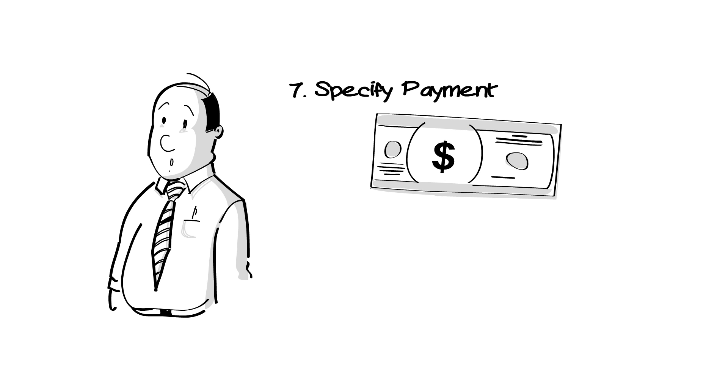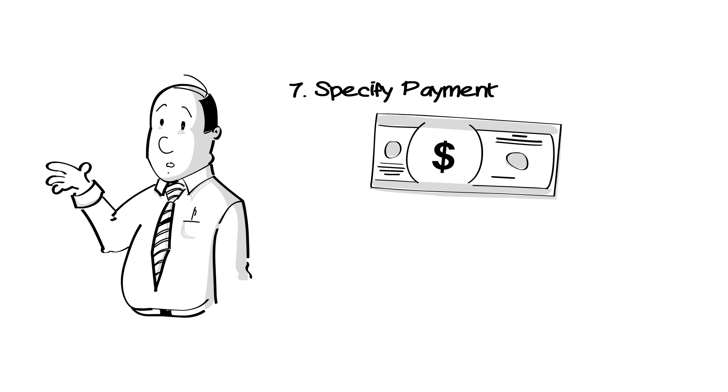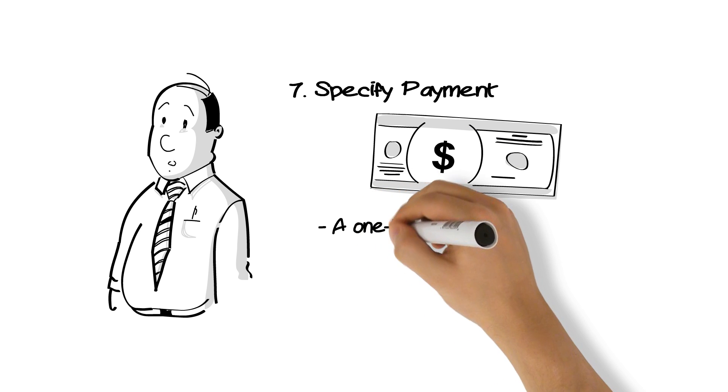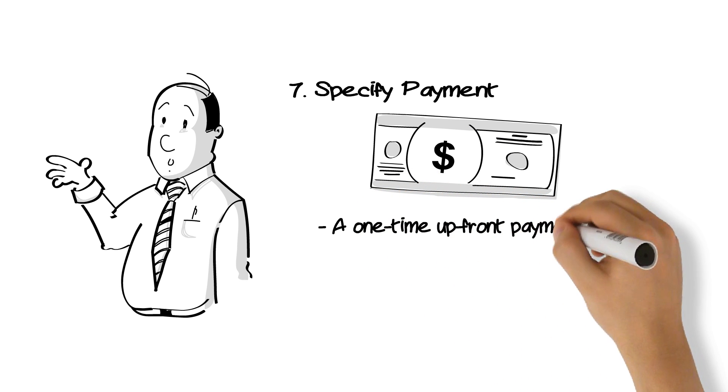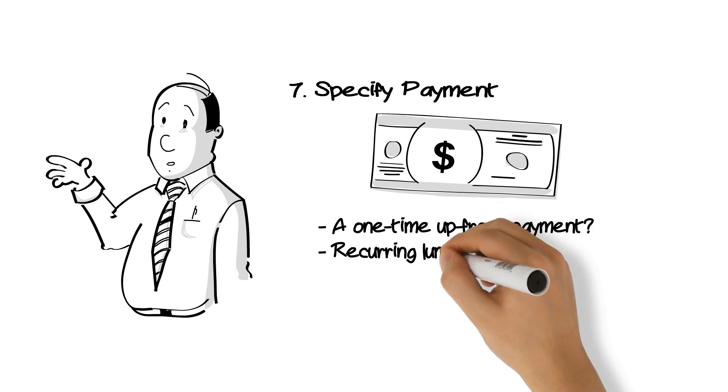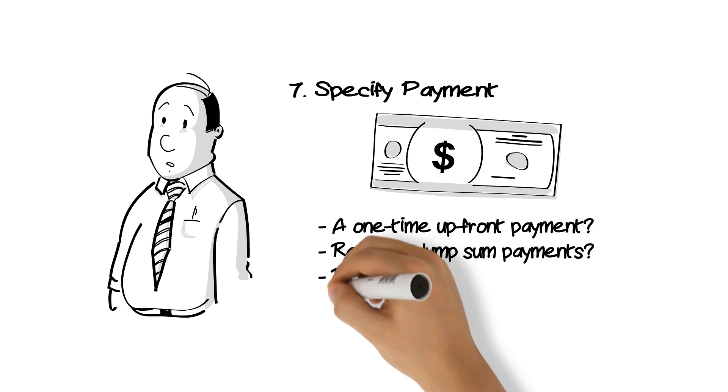Specify payment. Decide how your licensee is going to pay for the use of your patent. One-time upfront payment? Recurring lump sum payment? Royalty per sale? Or is it a mixture of all of these?